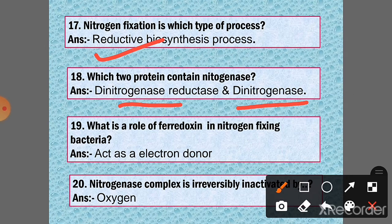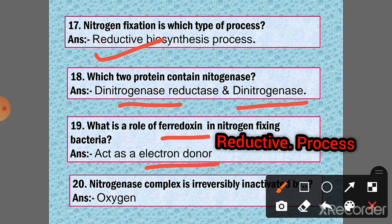Question 19: What is the role of ferredoxin in nitrogen-fixing bacteria? Answer: Acts as the electron donor. Because nitrogen fixation is a reductive process, so it requires electron donor.